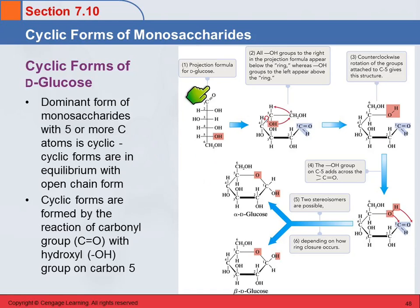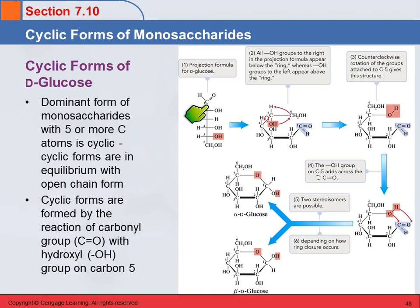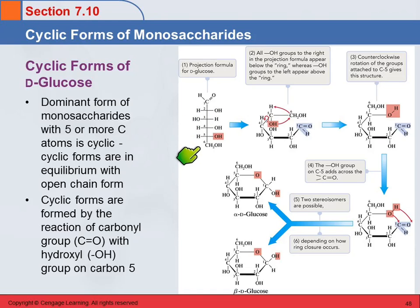We've been learning how to look at monosaccharides as Fischer projections, putting the carbon chain vertically and looking at the chiral centers down the middle. And this is the straight chain form of glucose.